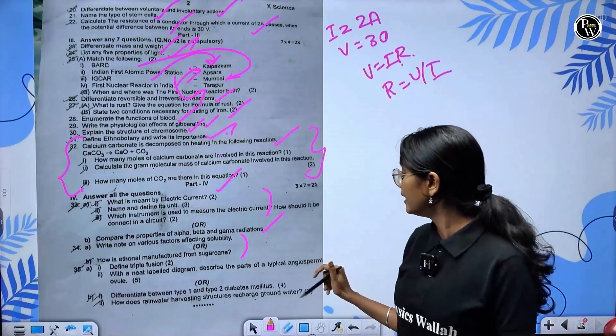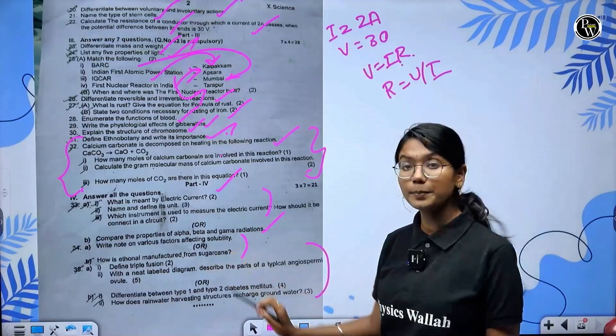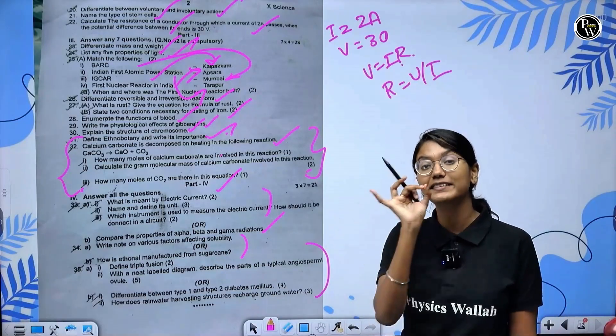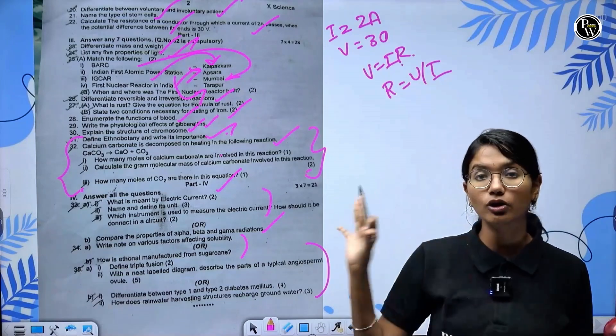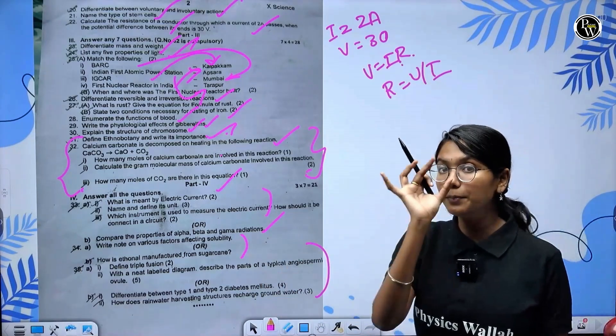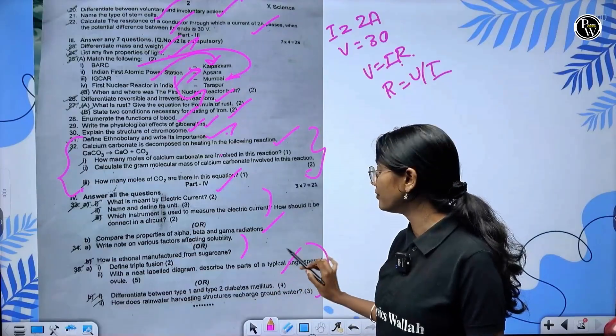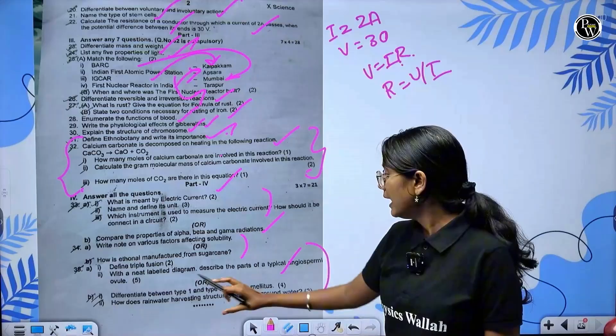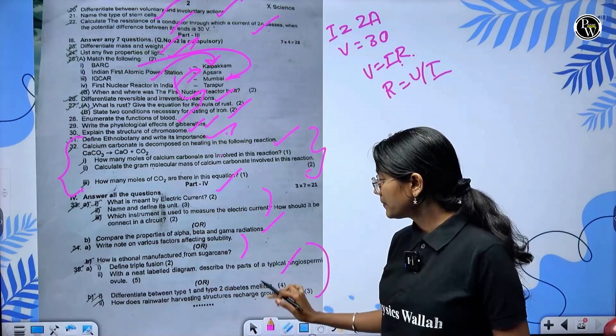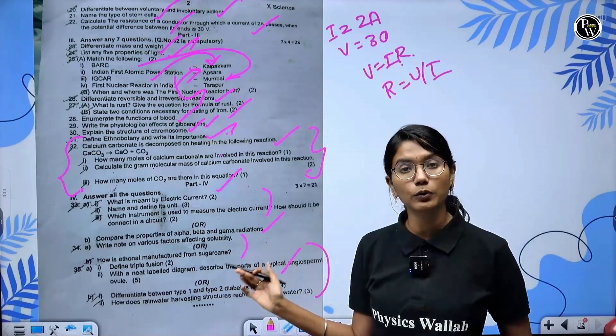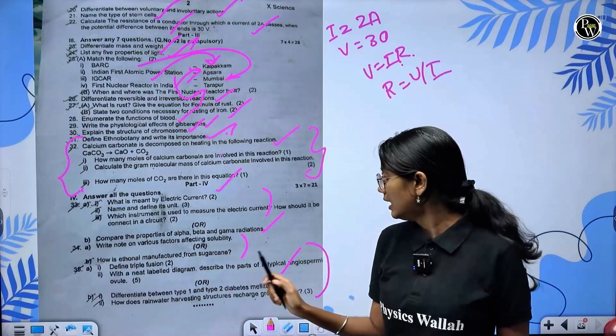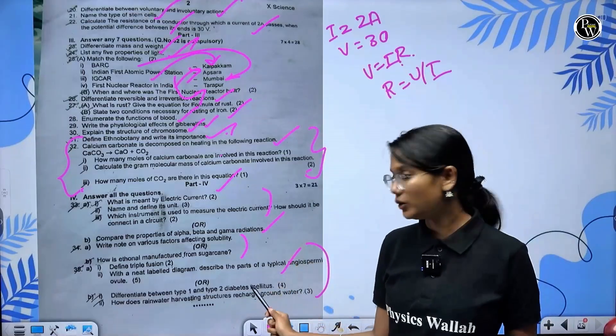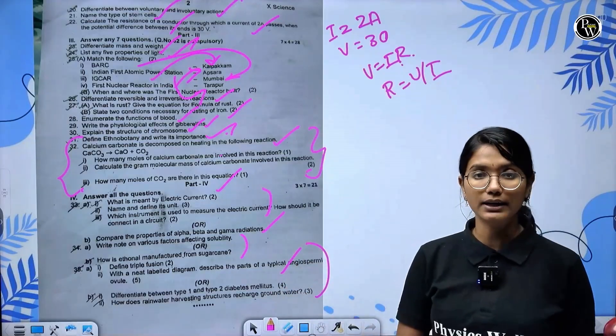Factors affecting solubility - pressure, temperature. How is ethanol manufactured from sugarcane - very important in carbon and its components. Define triple fusion in reproduction with diagram and proper label. Parts of angiospermic ovule. Type 1 and type 2 diabetes difference is very important. Rainwater harvesting and types - how do you recharge ground water.